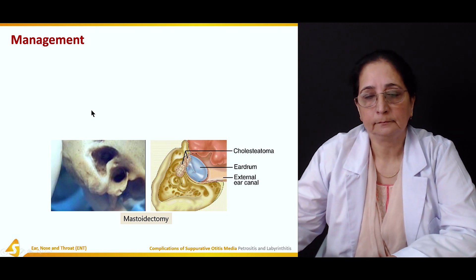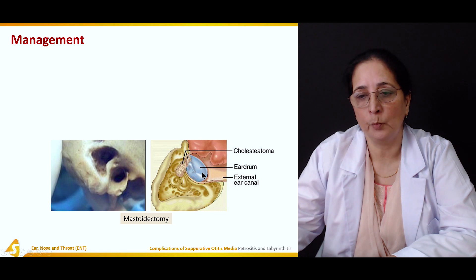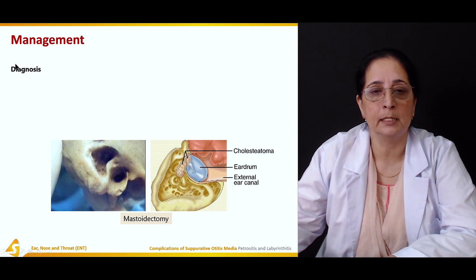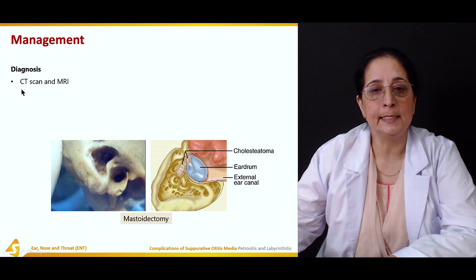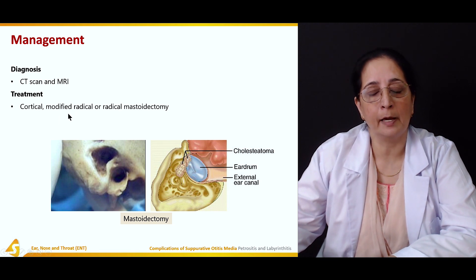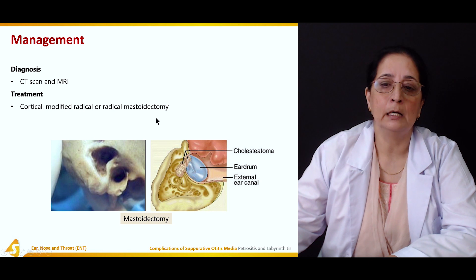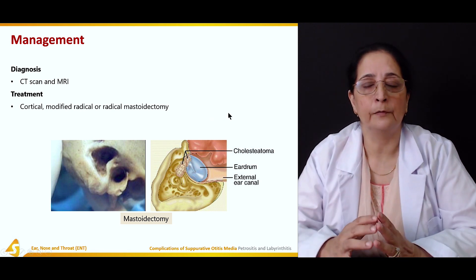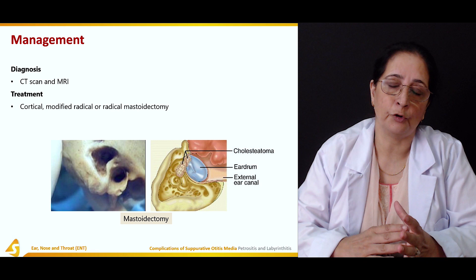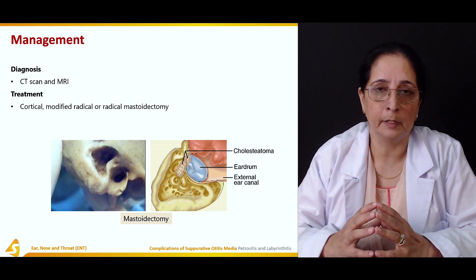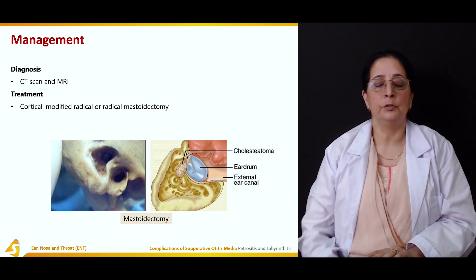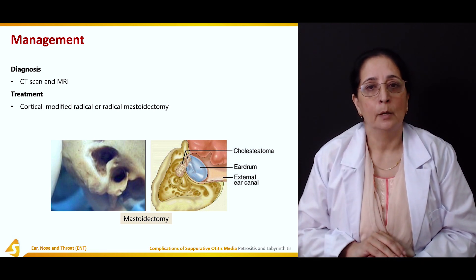Management: diagnosis is done by CT scan and MRI. Treatment involves cortical, modified radical, or radical mastoidectomy. Removal of the mastoid is performed because the infection originates from the mastoid and involves the petrous part of the temporal bone causing petrositis.